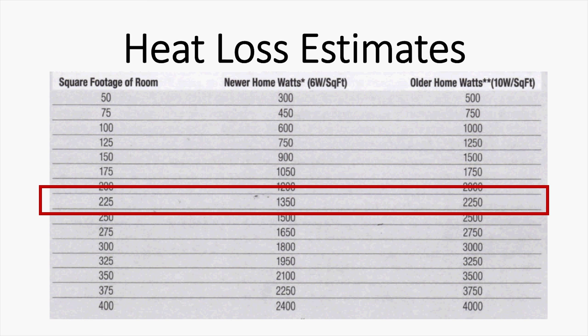Let's say we're trying to add heat in a bedroom that's far away from the furnace. So we're going to look at the older home. That's 2250 watts or 10 watts a square foot. That's a good starting point.